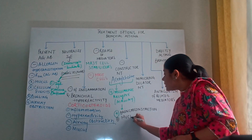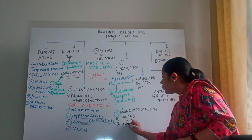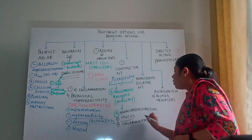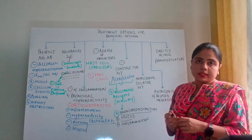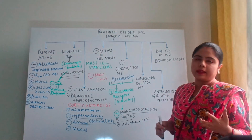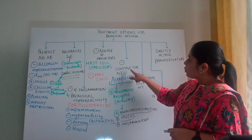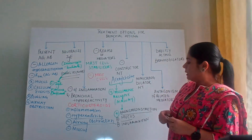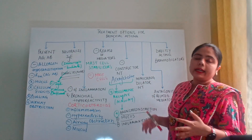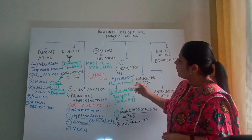When there is bronchoconstriction, the passage narrows. It also leads to an increase of mucus, and with excessive mucus, excessive inflammation, and bronchoconstriction, it becomes a tough passage for air to enter. Therefore, you will develop wheezing and difficulty in breathing, and ultimately bronchial asthma.